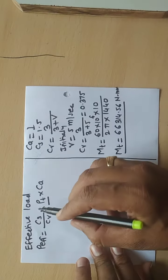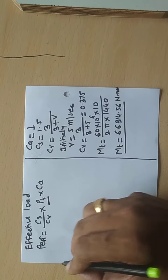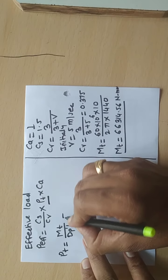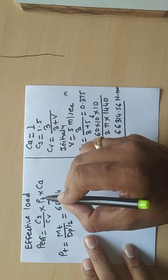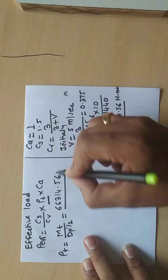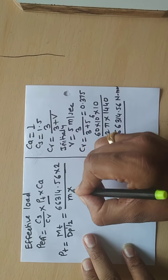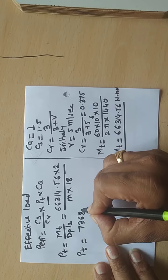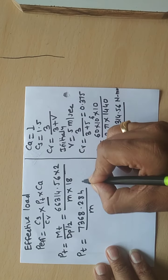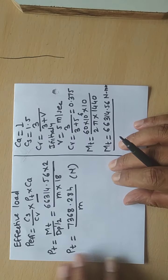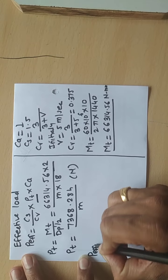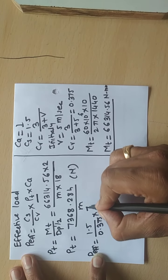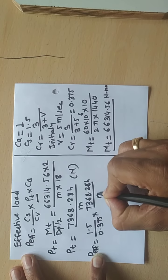Now find PT, the tangential or static load. PT = MT / RP = MT × 2 / DP, where DP = M × ZP = 18M. Substituting MT = 66314.56 and ZP = 18: PT = 7368.284 / M Newton.